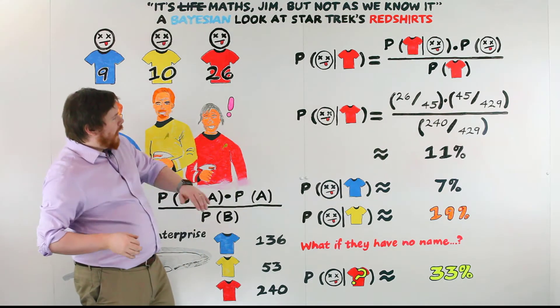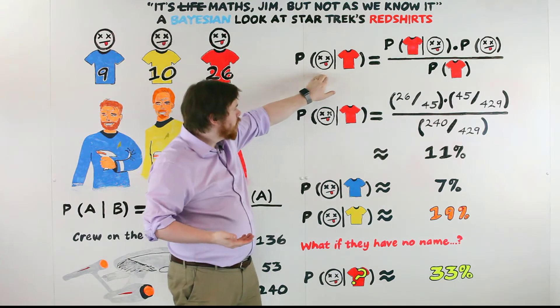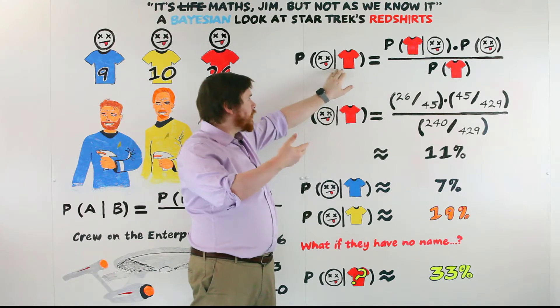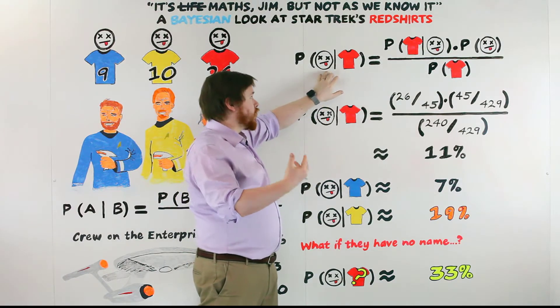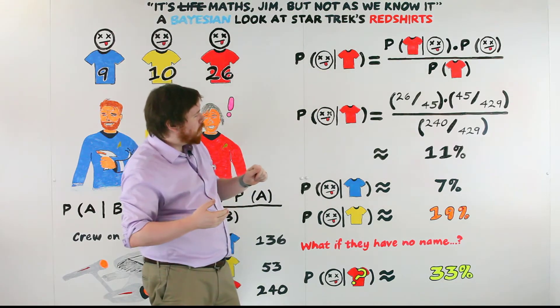So what we actually want to look at is what is the probability that someone will die given they are wearing a red shirt. And that's what we can use Bayes' theorem for. Testing a hypothesis based on some known observation that we have made. And to do that we need to combine several probabilities.